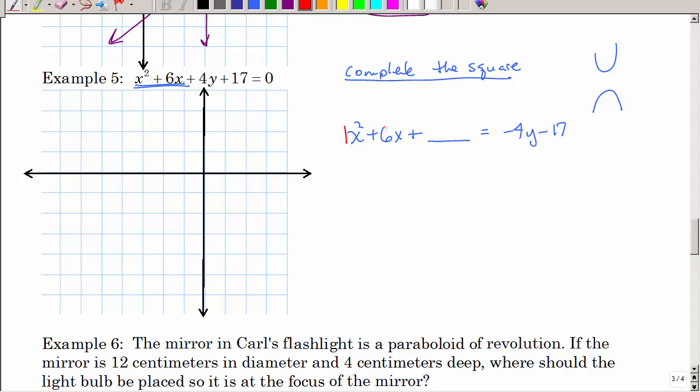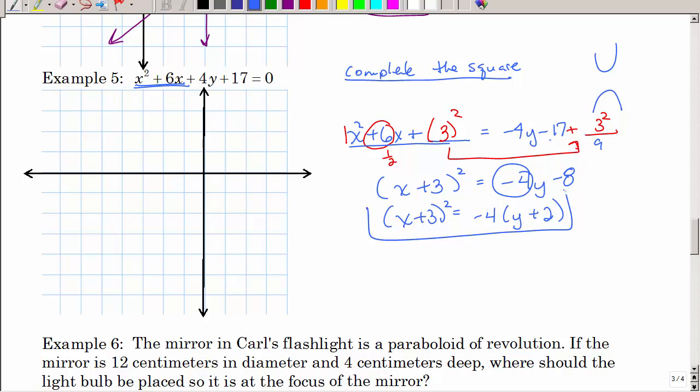Completing the square, that has to be 1. We want to take half of that, then we want to square it, and we want to make sure that we put that on both sides. We're balancing the equation. And then we have created a perfect square trinomial that factors. Something you should have done in college algebra or even algebra 2 class in high school. And then let's see, that's 9, so negative 17 plus 9 is negative 8. Then I can factor that out.